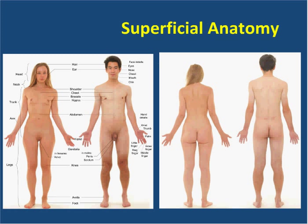These images, available in the public domain through Wikipedia, describe the superficial anatomy of the human body, male and female. Generally, the body is divided into the head, the chest, the abdomen including the pelvis, and the extremities, upper and lower. The body has an anterior surface, posterior surface, and you can also view the body laterally — that is, from the sides.